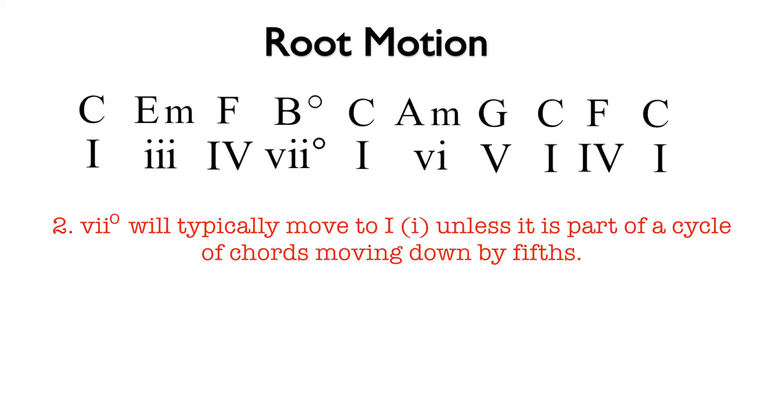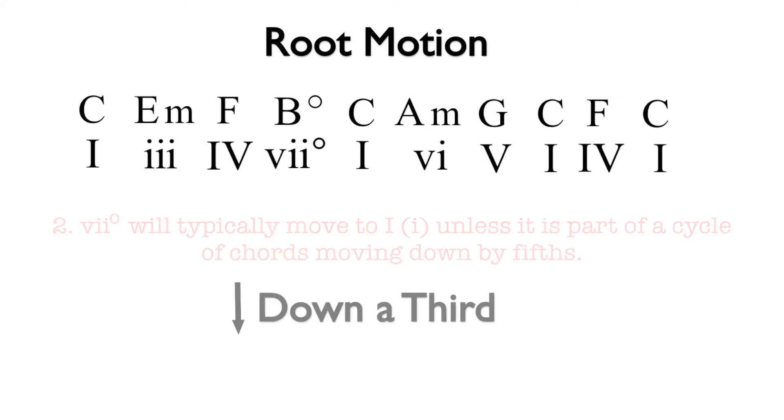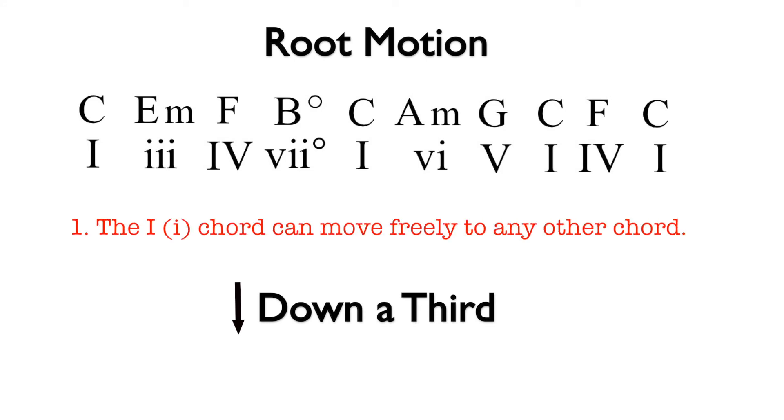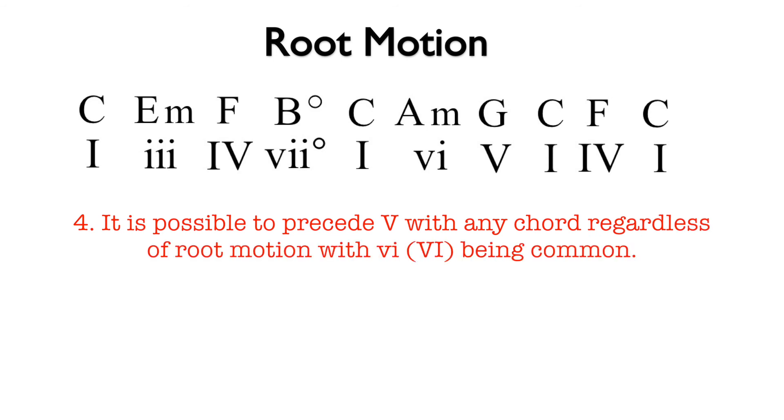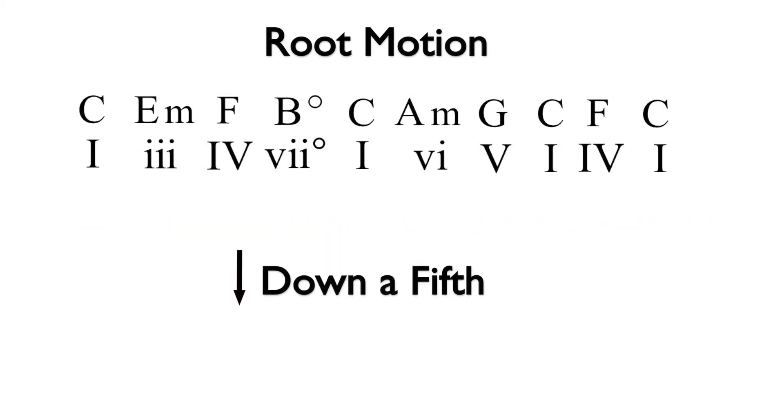From I, we use common root motion to move down a third to vi, but this also works because any chord can precede V regardless of root motion, with vi being common.